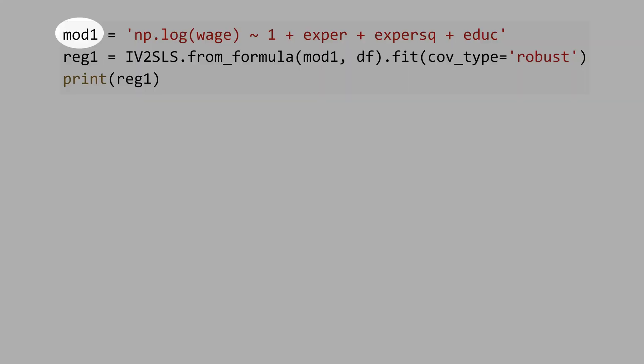Let's specify model1. The outcome variable is log wage, and then once a constant, we have experience, experience square,